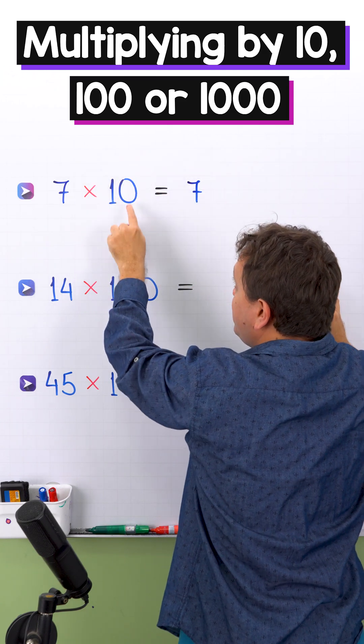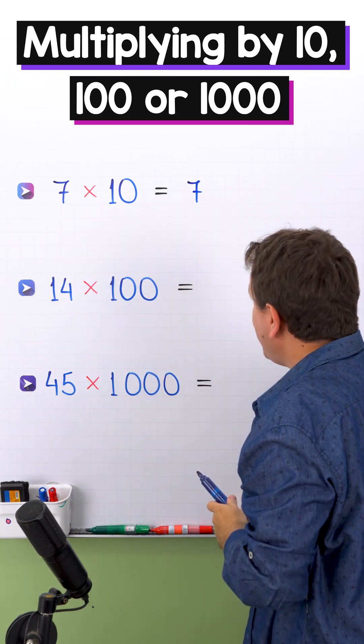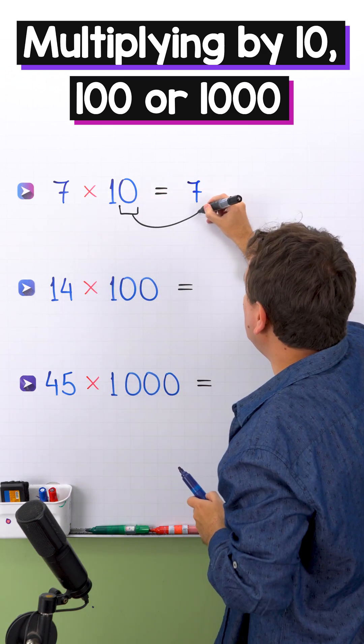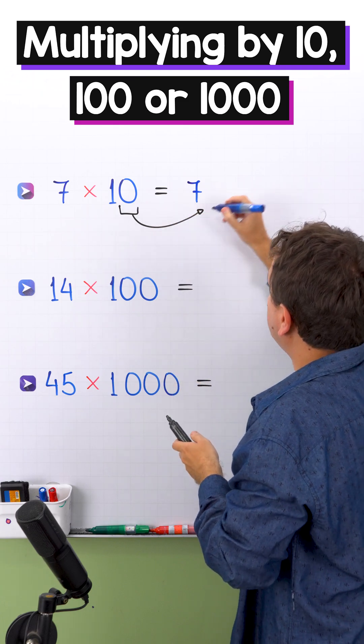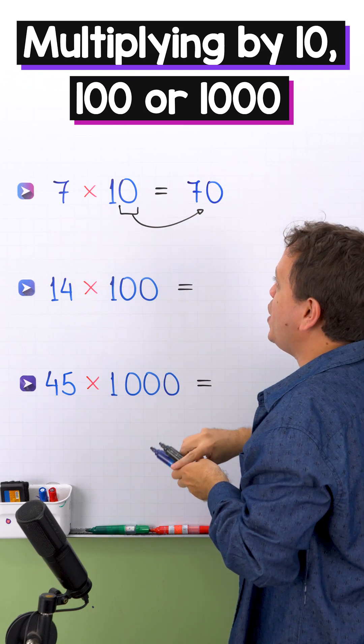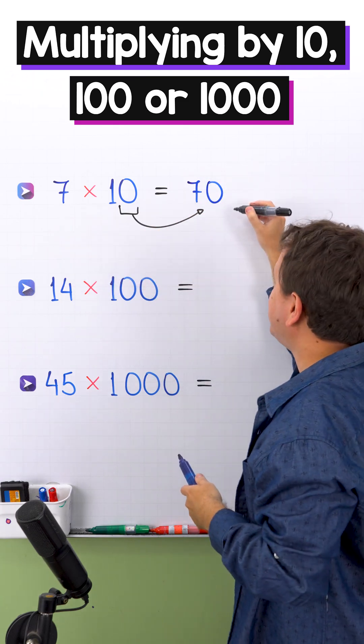Then, we're going to show the 0 that we hid before, and finally, we're going to move the 0 to the right. Yeah, we move this 0 to the right. In that way, 7 times 10 gives us 70.